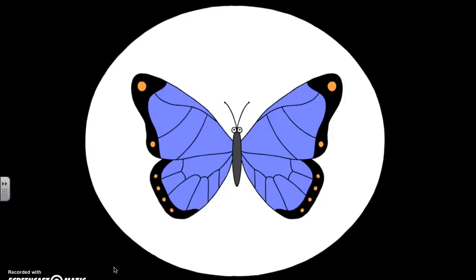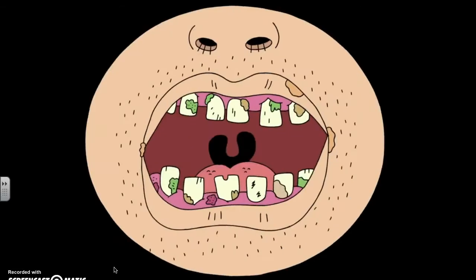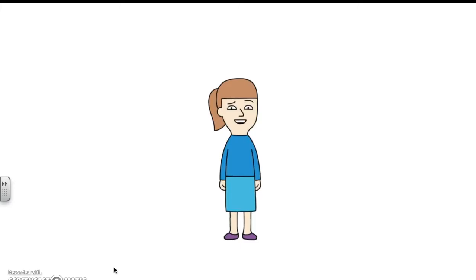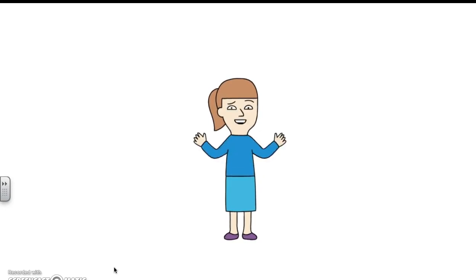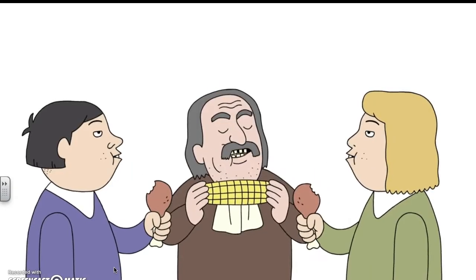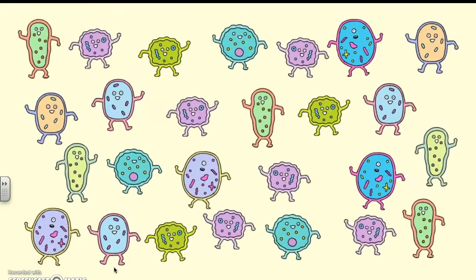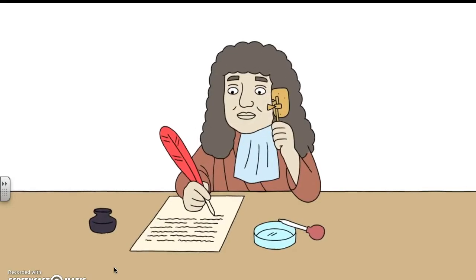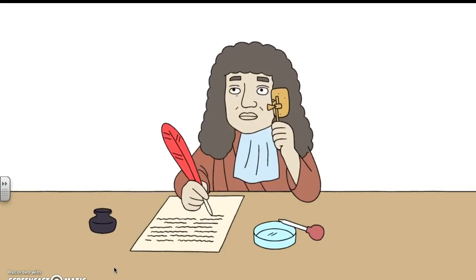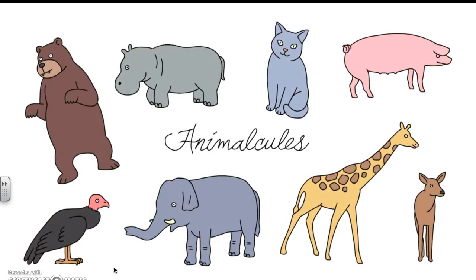Once Leeuwenhoek had his microscope ready, he went about looking at anything and everything he could, including the gunk on his teeth. He actually discovered bacteria by looking at dental scrapings — which, keeping in mind that people didn't brush their teeth much back then, gave him a lovely collection of bacteria to observe. When he wrote about his discovery, he didn't call them bacteria but called them animacules, because they looked like little animals to him.